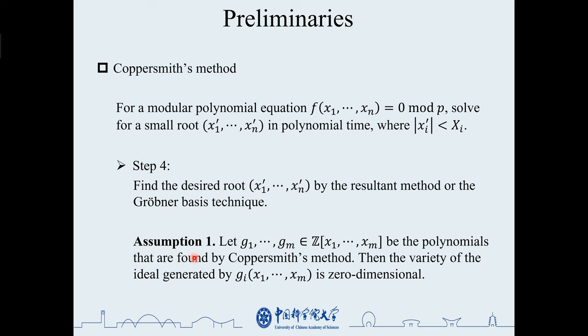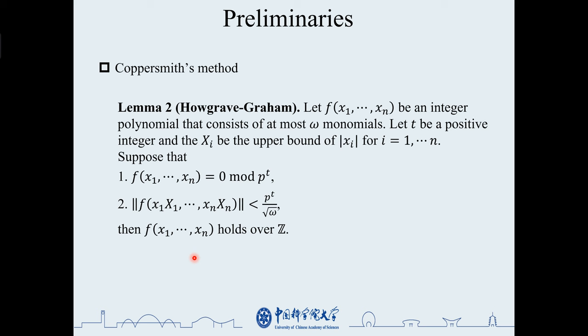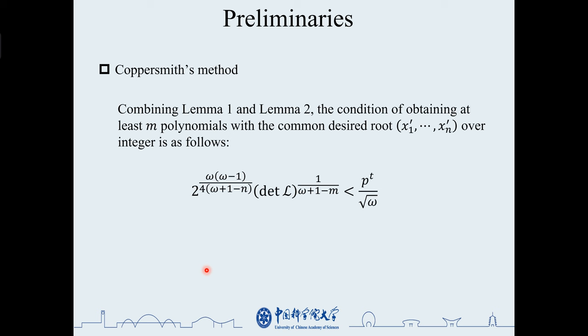In the process, the following lemma reformulated by Howgrave-Graham is needed. It states under which condition a modular equation holds over the integers. Combining lemma 1 and lemma 2, the condition of obtaining at least M polynomials with the common desired root xi over integer is this inequality.